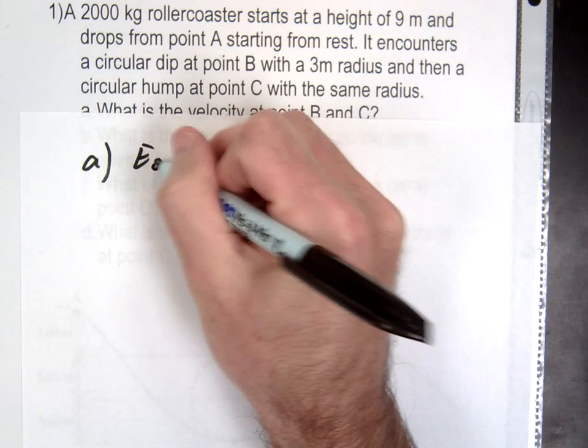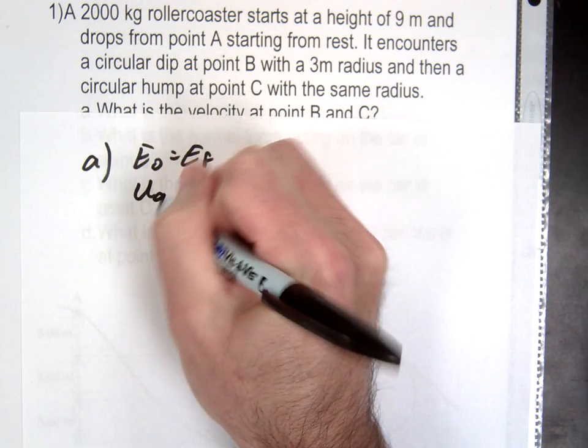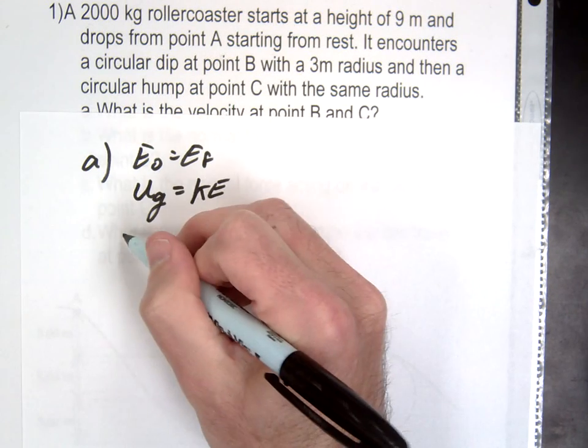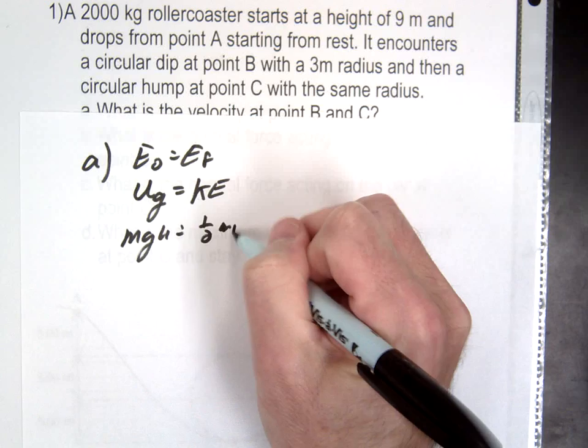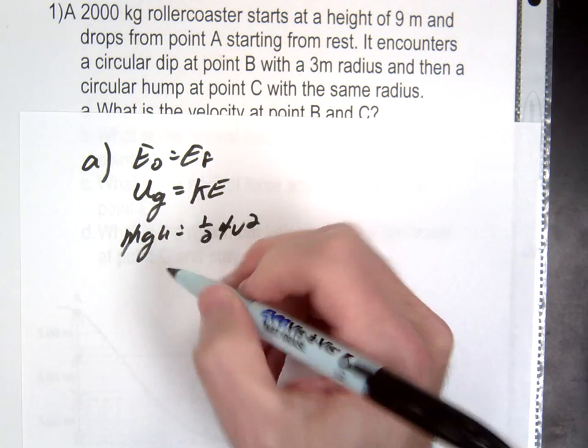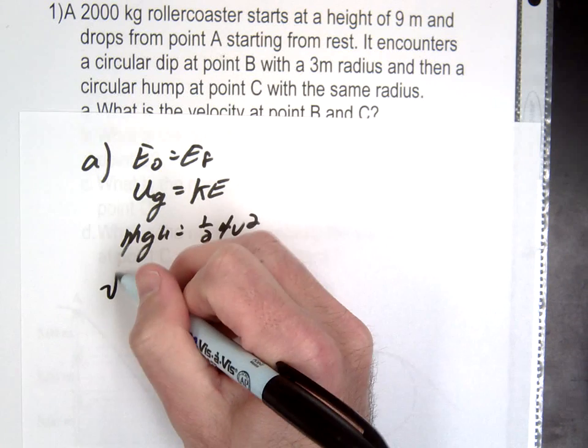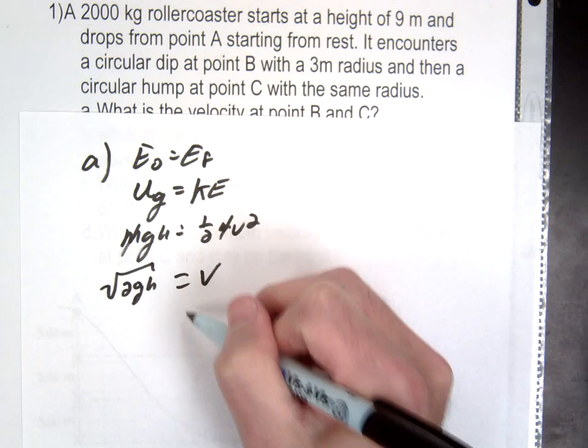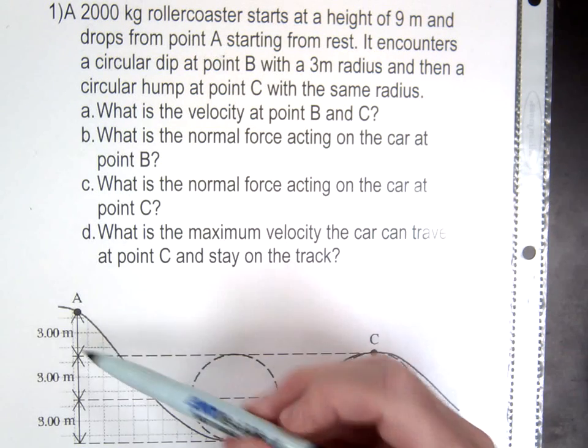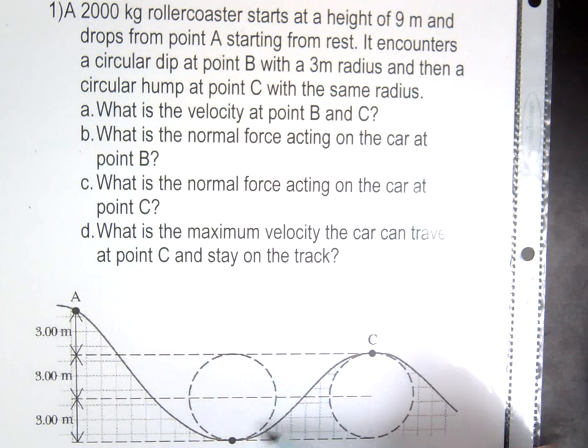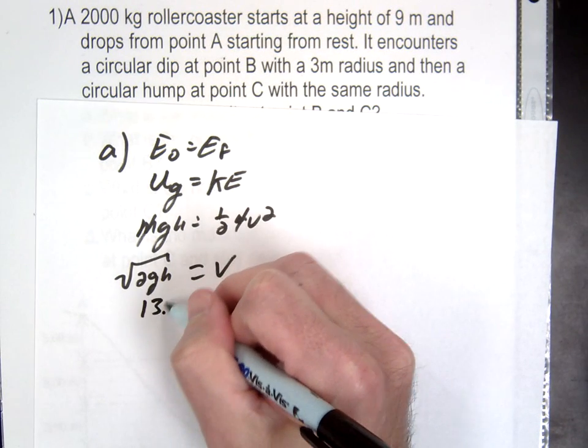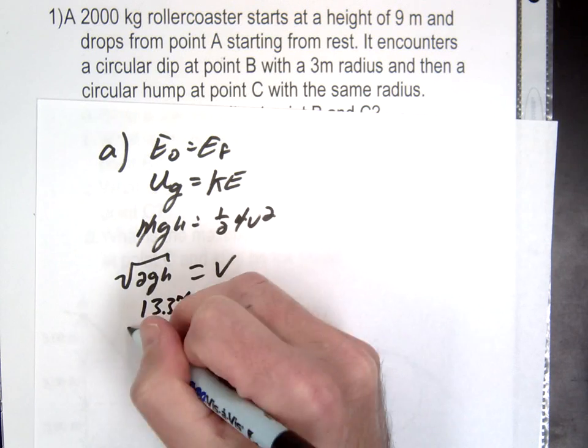We'll say at the top, what kind of energy do we have? Potential. Potential. At the bottom, what kind do we have? Kinetic. Okay, so we're just going to go mgh, one half mv squared. Hopefully at this point you guys can whip through these relatively quickly, right? And we get our v equals square root of 2gh. What's our h in this problem? 9 meters. So we're going from 9 all the way down to 0, right? So what's the answer for that again?